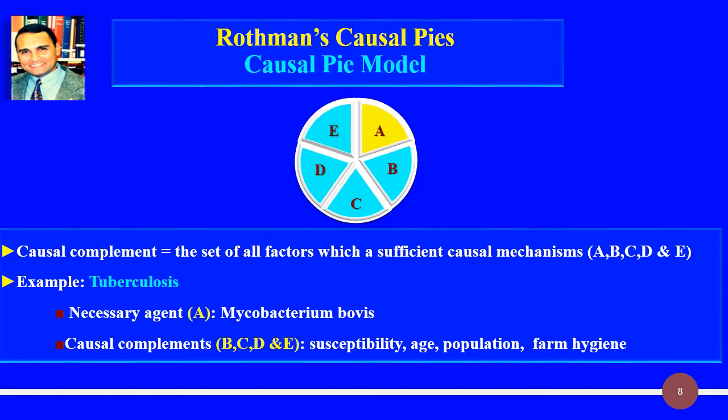For the occurrence of tuberculosis, all causal components have to be present, and the necessary component here is letter A — the presence of the necessary agent, which is Mycobacterium tuberculosis.